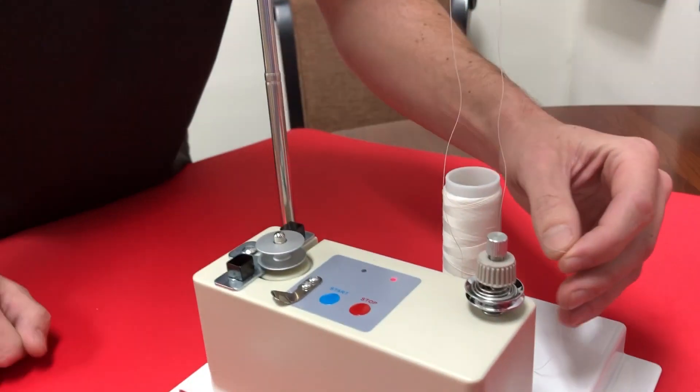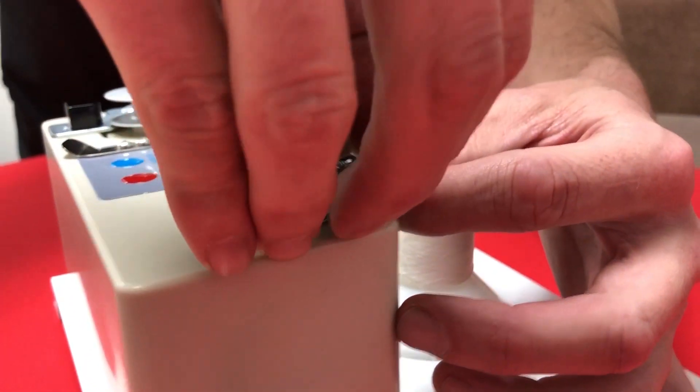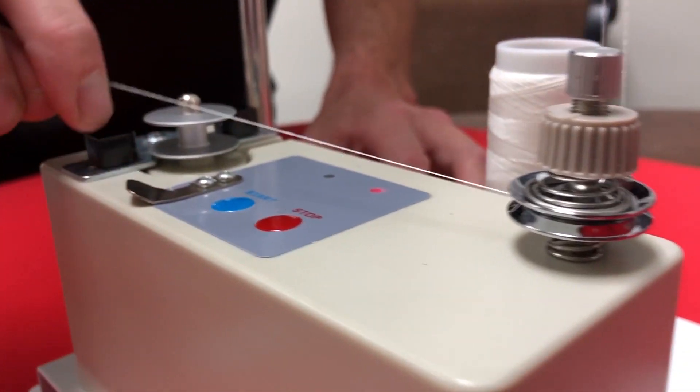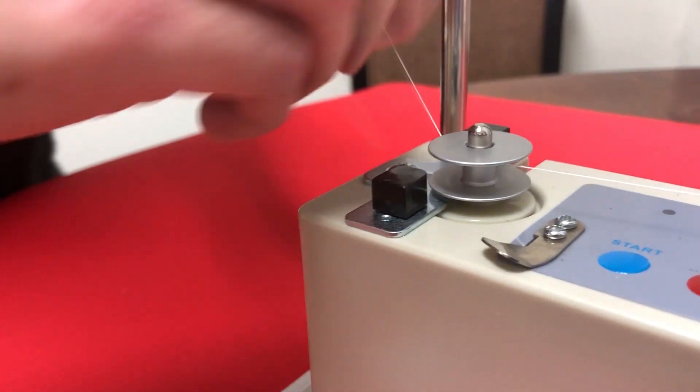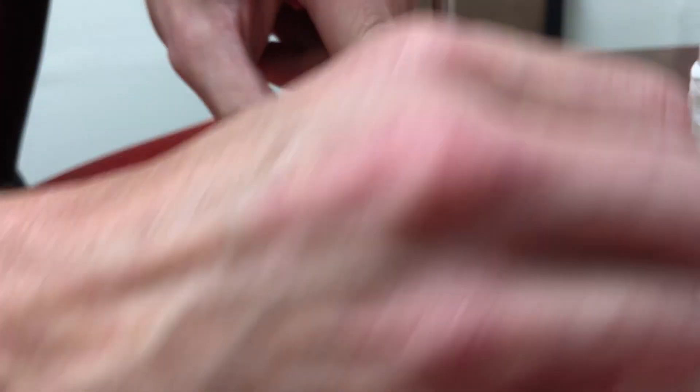To start, you'll take the tail of your thread and pass through the eyelet here, coming all the way around, making sure you get in your tension discs. Wrap it around your actual bobbin four or five times, and then you can take it and cut it off on the knife here.